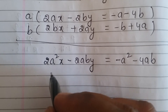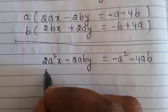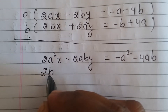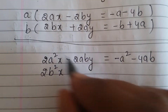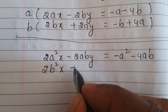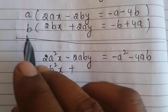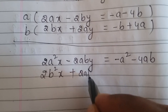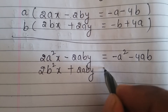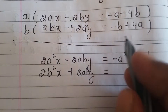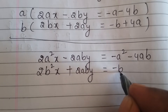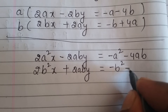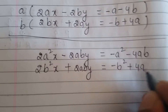Now doing multiplication of equation four by b: b into 2bx gives 2b²x, plus into plus gives plus, b into 2ay gives 2aby. On the right side: b into minus b gives minus b², and b into plus 4a gives 4ab.